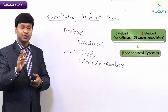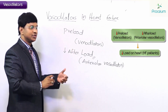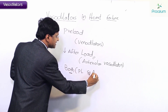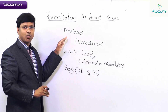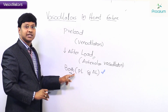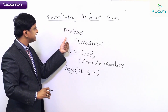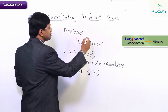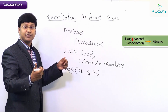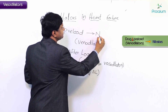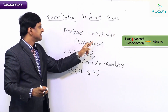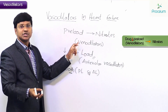We have a group of drugs which will reduce both the preload and the afterload. The drugs which reduce the preload are venodilators — specifically the nitrates. The drugs which reduce the afterload are arteriolar dilators.